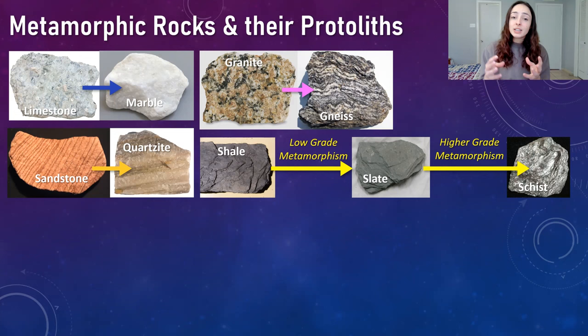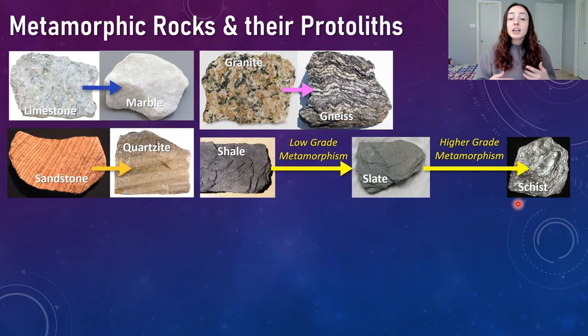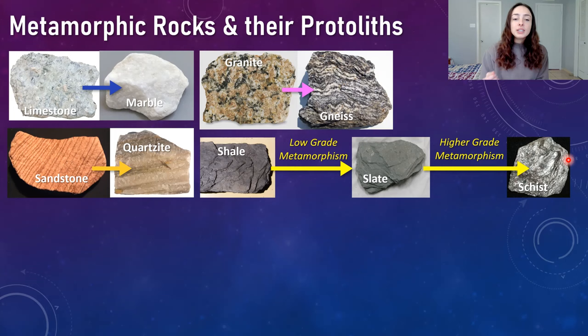Schist looks very shiny compared to boring old shale or clay because of all the mica minerals it contains, like muscovite. These mica minerals form from the original protolith's clay minerals, so it's easy to recognize that the protolith to schist was a clay-mineral-dominated rock. Basalt is a more difficult case — basalt can have many different compositions, making it hard to say what metamorphic rock it becomes.